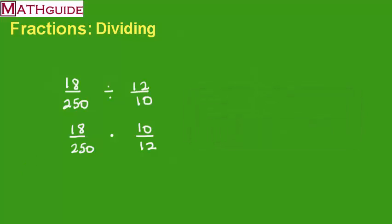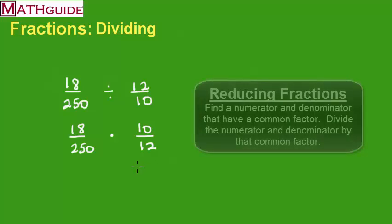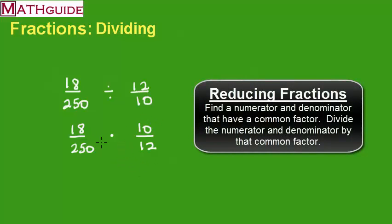Okay, so now I start to see what could be reduced. So I'm looking for common factors. Like, for instance, I could see that both of these could be divided by 10. So I'm going to divide those by 10. I'll get 1 and 25.